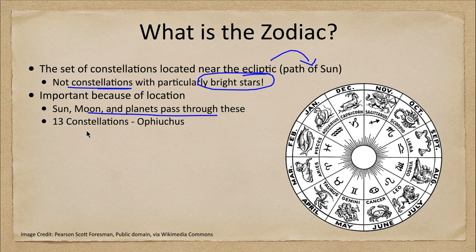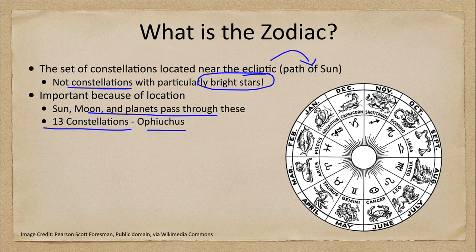You may also be familiar with a 13th zodiacal constellation: the constellation of Ophiuchus. Ophiuchus is located near Scorpius. The sun actually passes through only a very small bit of Scorpius — about a week's worth — and it will spend much longer in the nearby constellation of Ophiuchus.